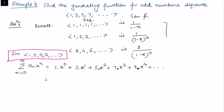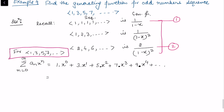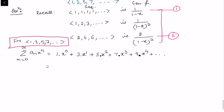We have to see if we can use the known results to find the generating function for this sequence. Let's call the natural numbers result equation 1 and the evens result equation 2.